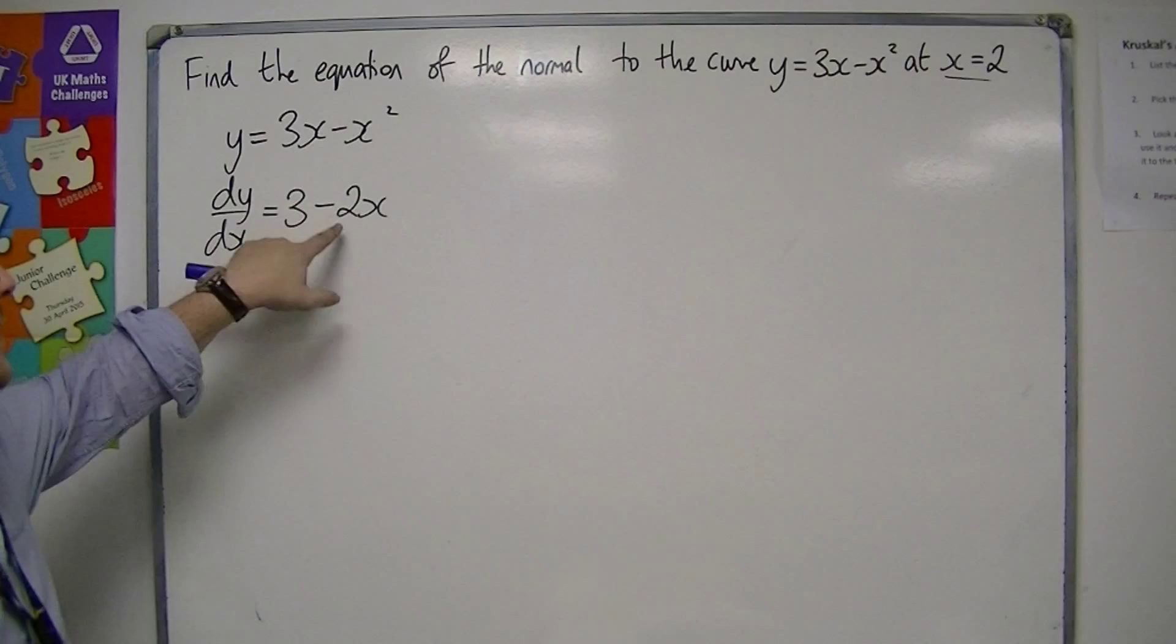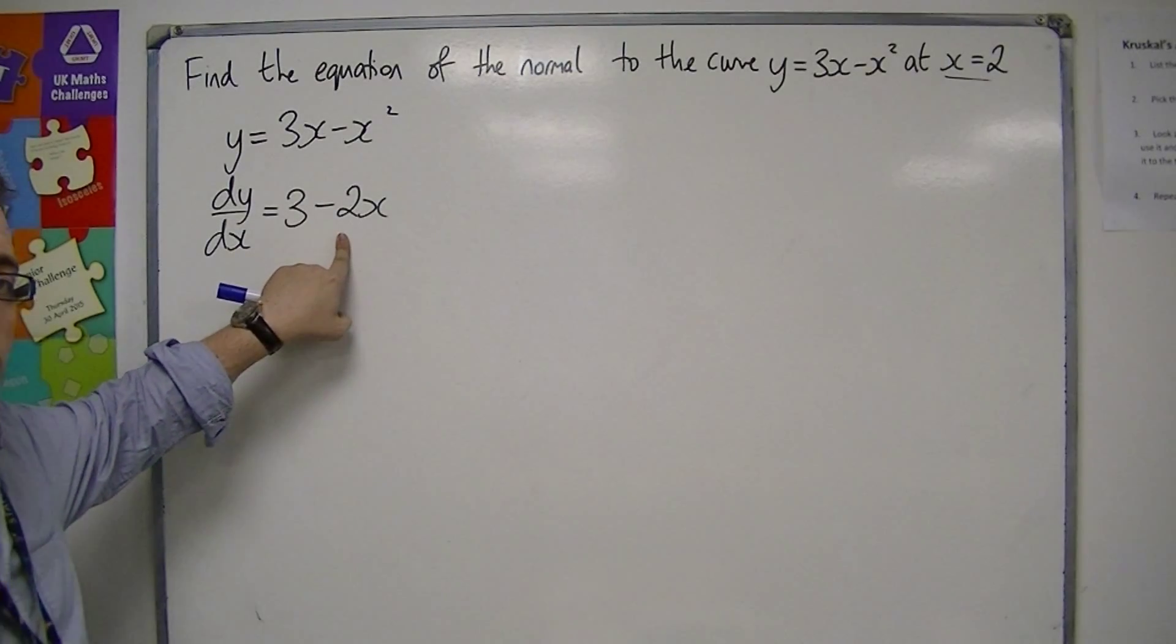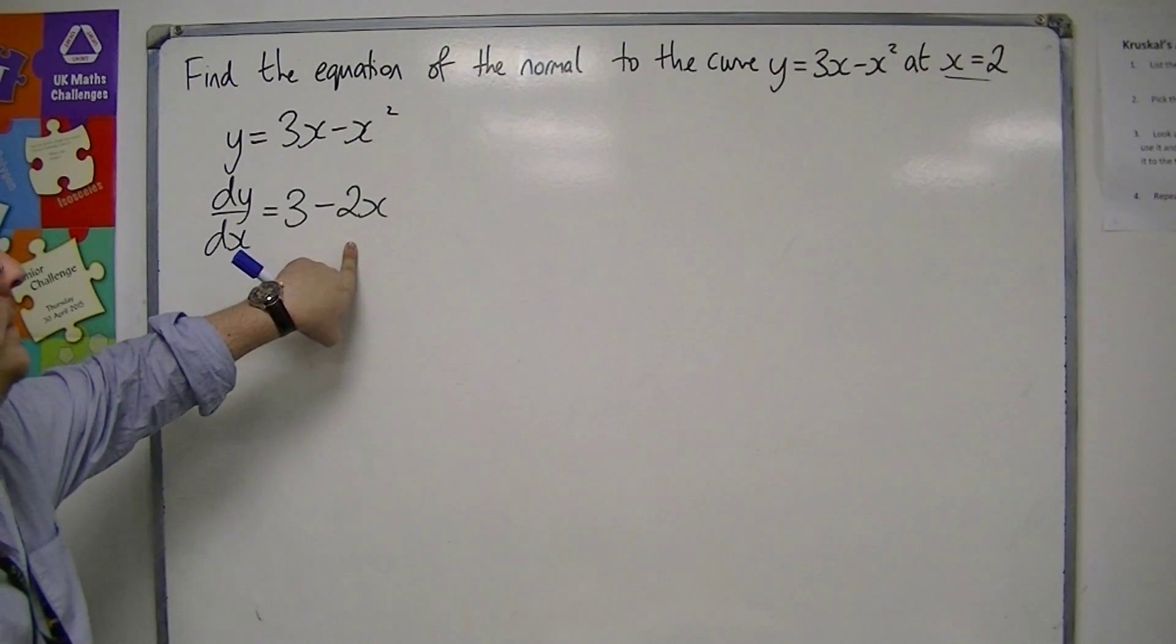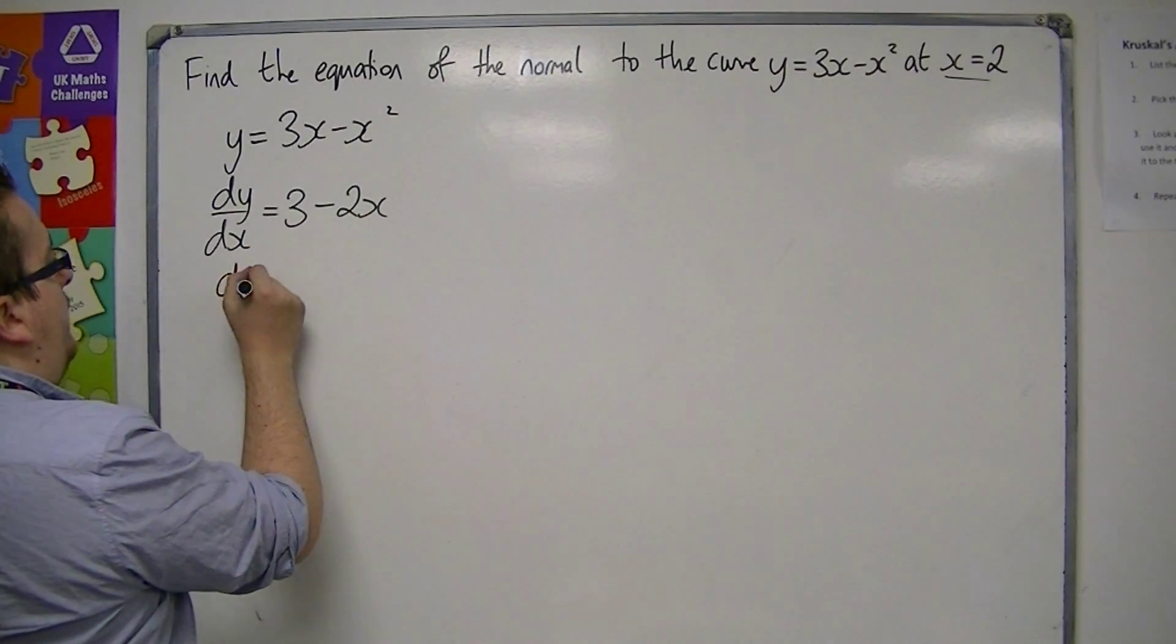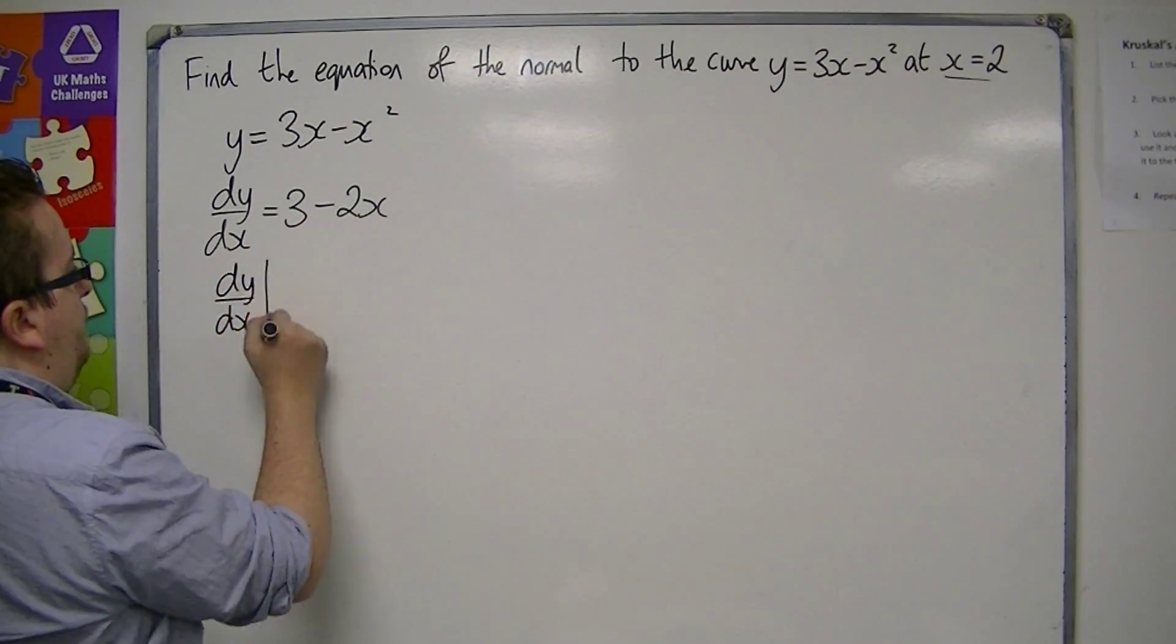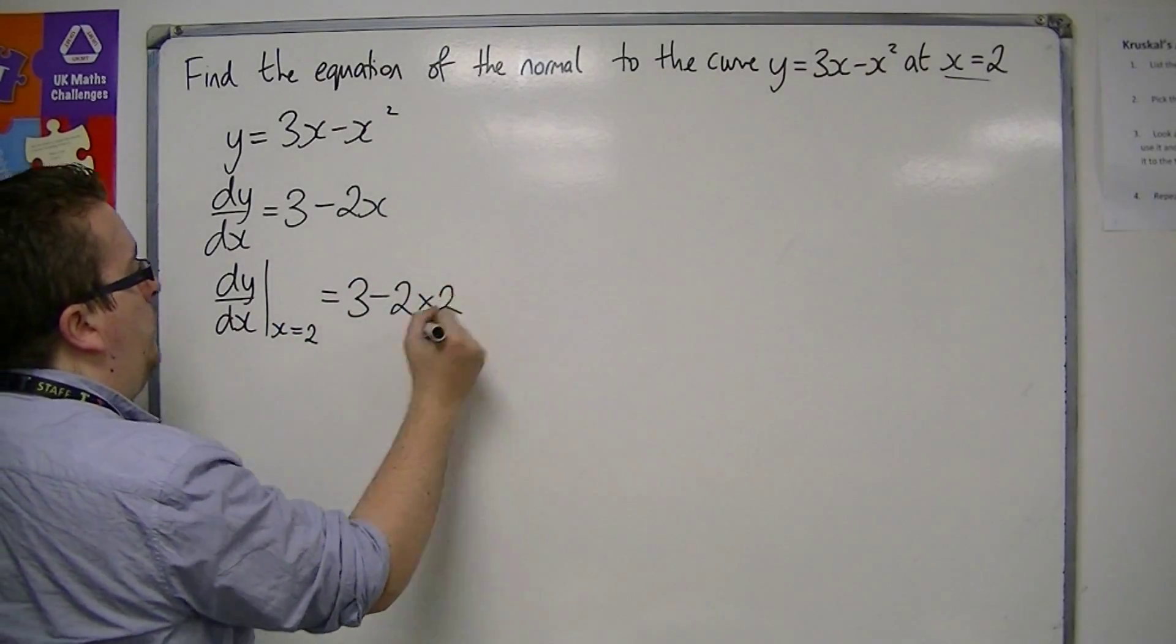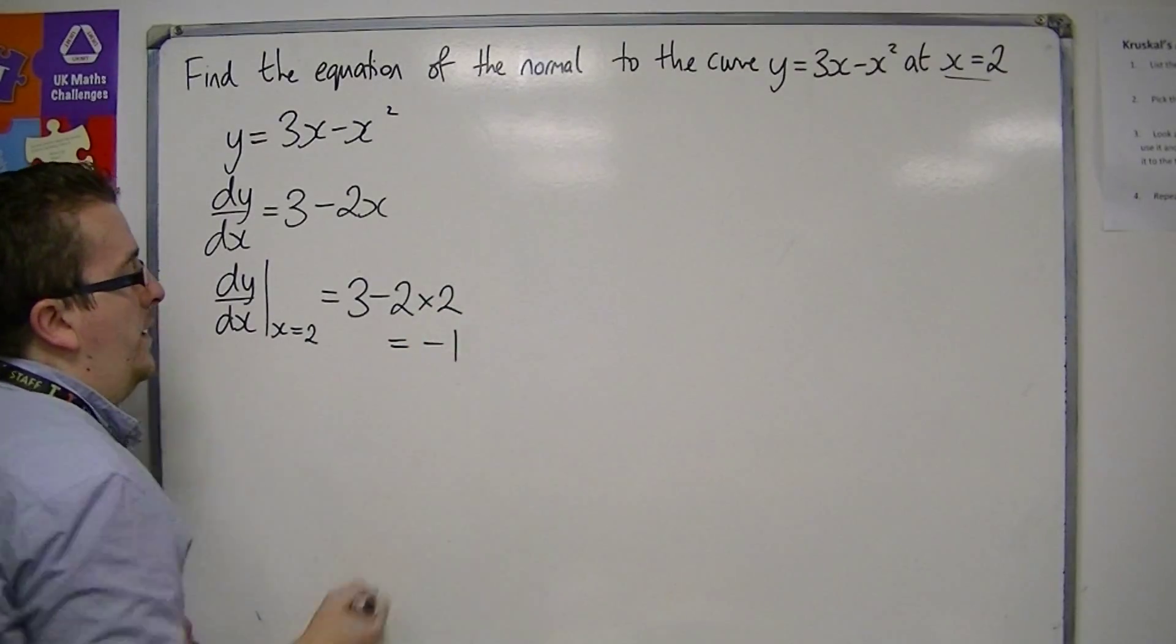So that tells me the gradient of the tangent at every point on the curve. If I evaluate it at 2, then I get 3 take away 2 lots of 2, which is minus 1.